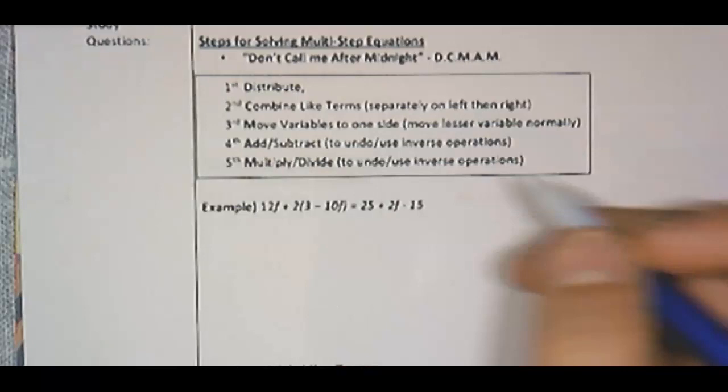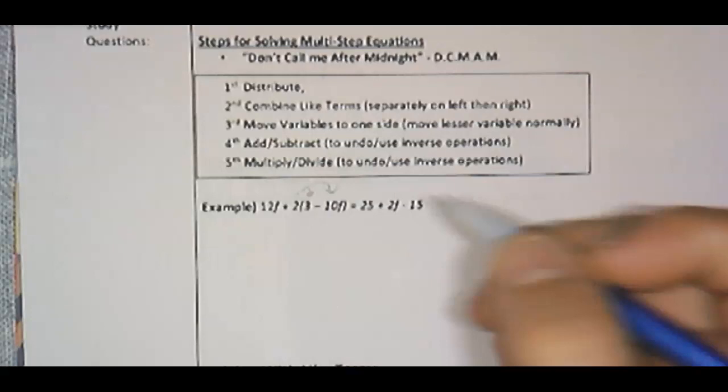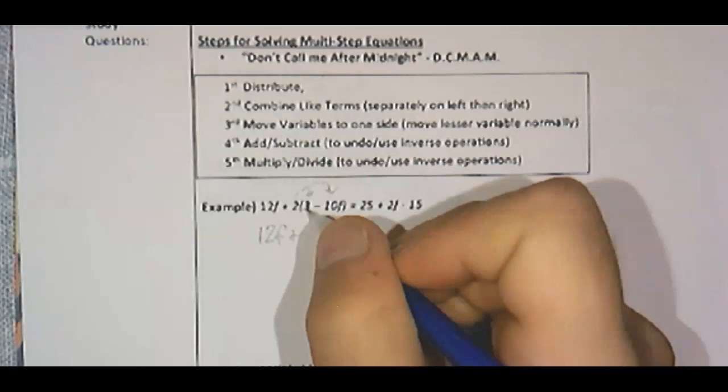So this first problem, 12f plus 2 times 3 minus 10f. If you follow the steps, the first step says to distribute. So I'm just going to follow the steps. This problem is kind of long, it has like all the steps. So there is some distributing here.